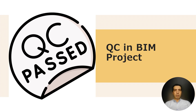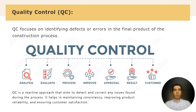What about quality control? Quality control focuses on identifying defects and errors in the final product of the construction process. We can consider quality control as a reactive approach that aims to detect and correct any issues found during the process. It helps in maintaining consistency, providing product reliability, and ensuring customer satisfaction. This happens by analyzing the product, writing down an evaluation, then doing the process to improve the quality, and when you get approval for the quality of the product, the result will be better and you get customer satisfaction.